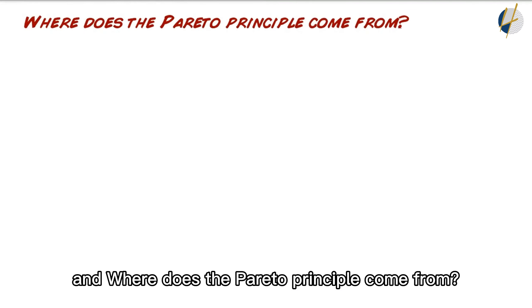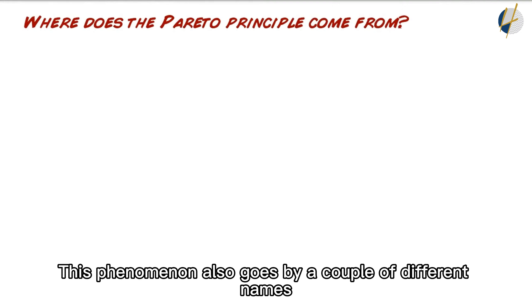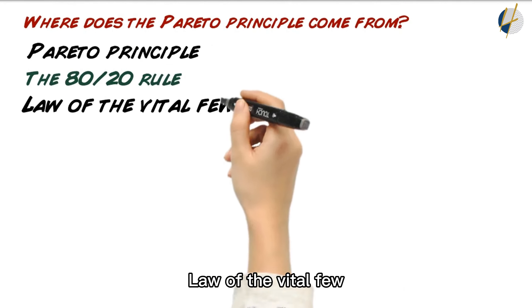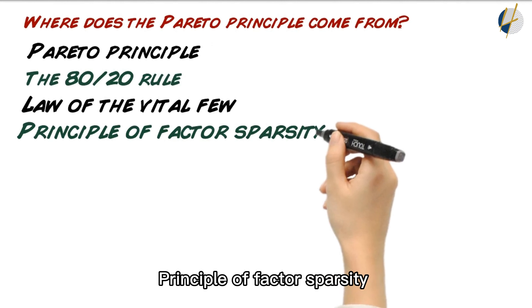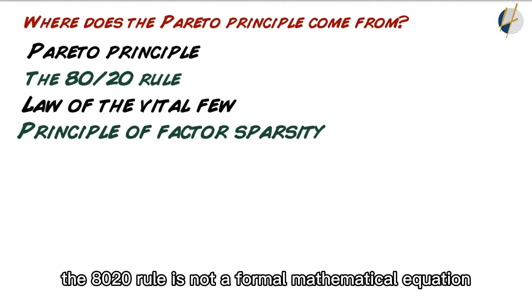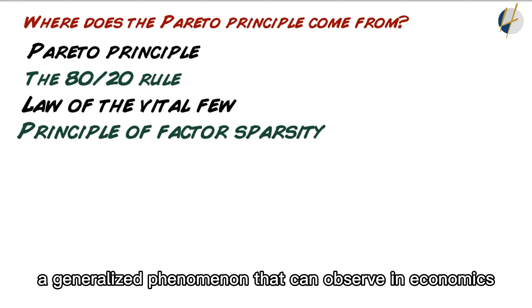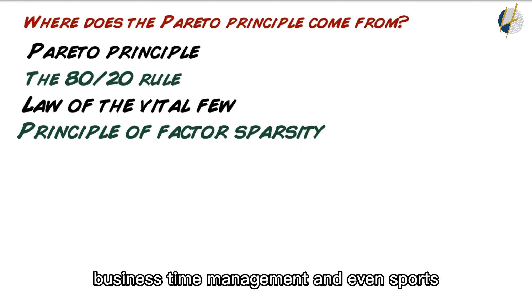And where does the Pareto Principle come from? This phenomena also goes by a couple of different names: Pareto Principle, the 80-20 rule which is the most common, law of the vital few, principle of factor sparsity. The 80-20 rule is not a formal mathematical equation, but more a generalized phenomenon that can be observed in economics, business, time management, and even sports.